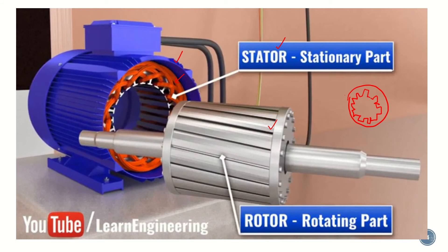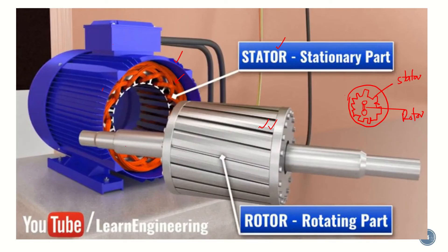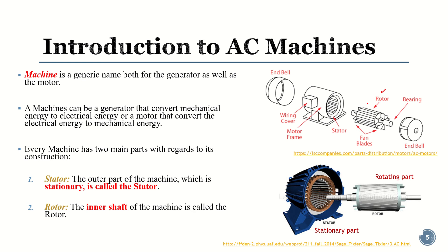Inside the stator we have the rotor, which we draw like this, and it is actually rotating. These are the basic components of a basic machine. Whether we call it a generator or a motor, both machines have these two basic components: stator and rotor. In more detail, we also have bearings, a cover, a motor frame, end parts, and other things, but the main focus of this chapter will be on the working of the stator and rotor and their operating mechanisms.